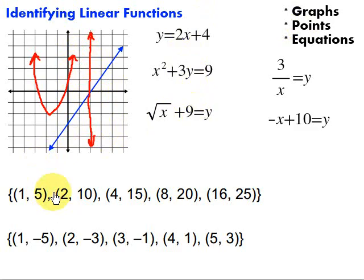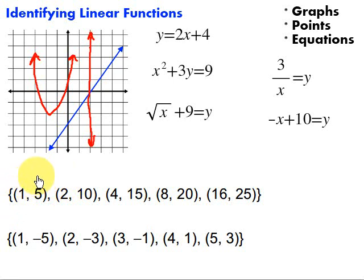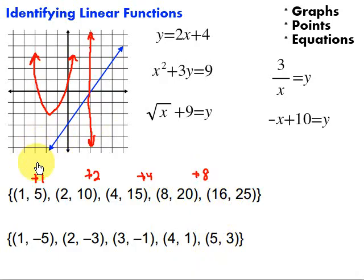That's graphs. Now, points. If we have points, in order to identify if it's a linear function, we need to have a constant change in the x values and a constant change in the y values. Looking at the x values here: 1 to 2 is plus 1, 2 to 4 is plus 2, 4 to 8 is plus 4, 8 to 16 is plus 8. We do not have a constant change in the x values, so this is not going to be a linear function.